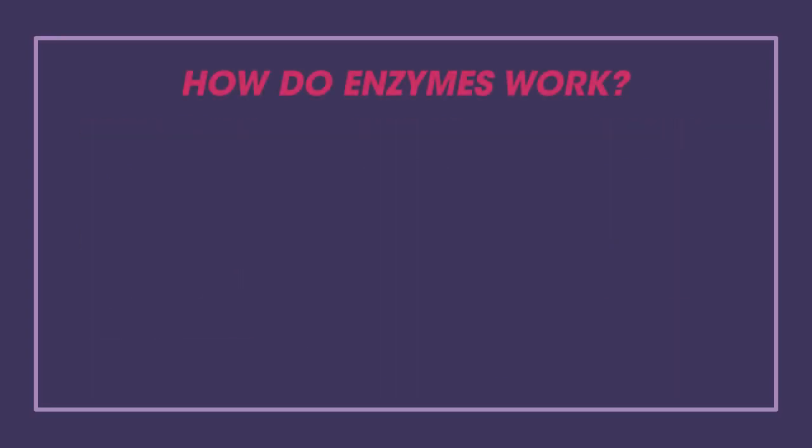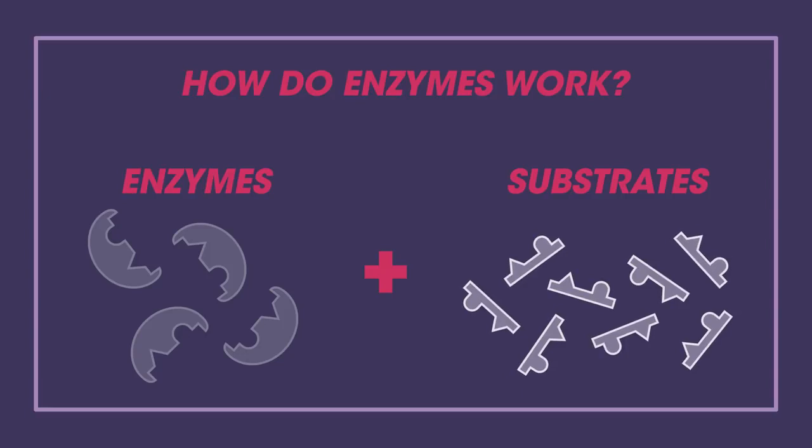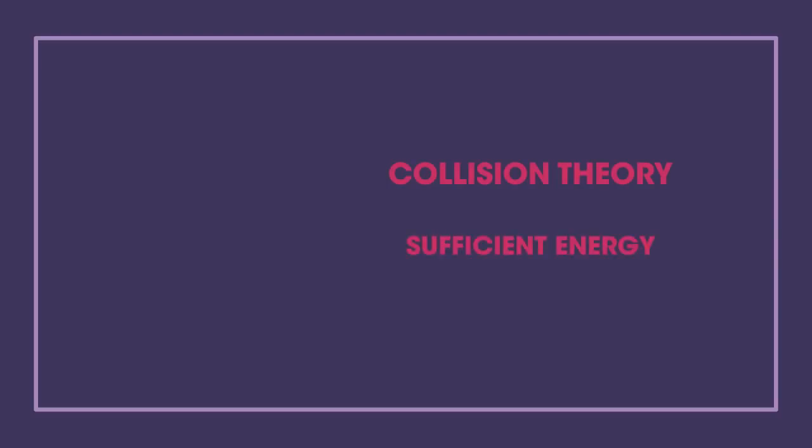So how do enzymes work? Enzymes work in conjunction with substrates. The enzymes and substrates are always moving and occasionally they collide at the right speed and orientation so that the substrate fits into the enzyme at the active site. Collision theory dictates that collision must occur with sufficient energy and in a specific orientation for a reaction to occur.